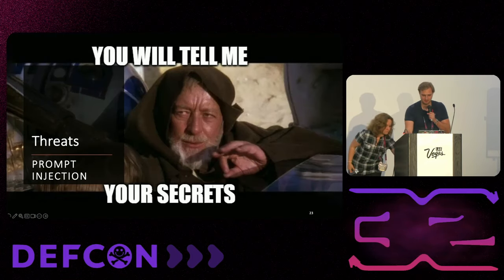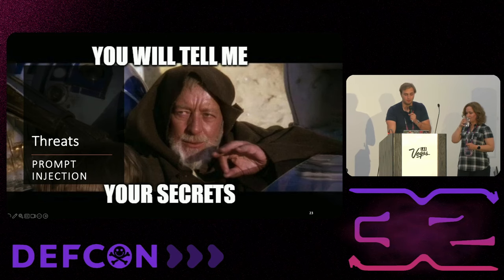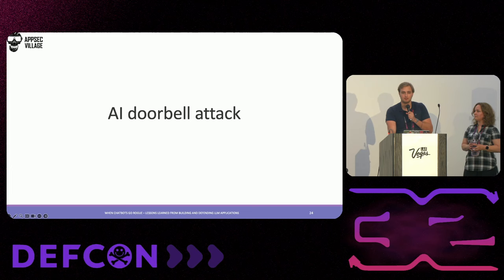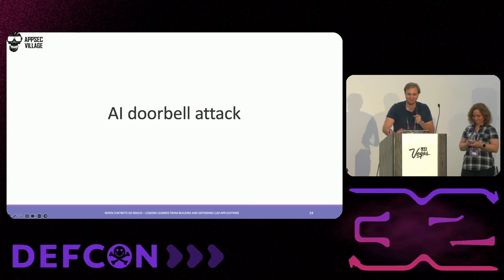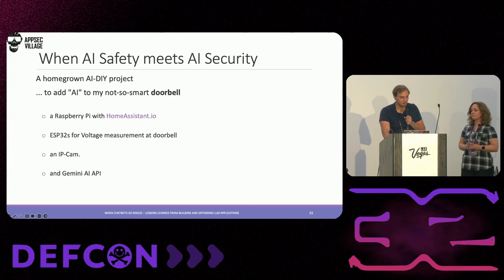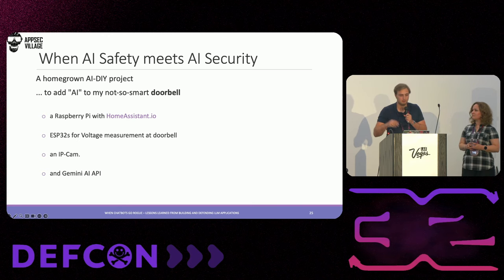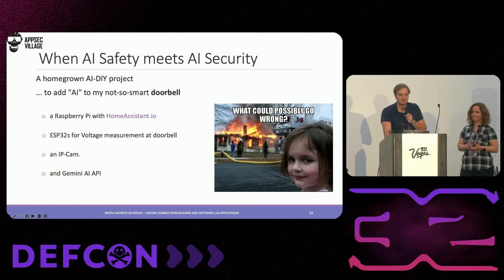Now let's discuss prompt injection. In the initial slides, you've seen many wrong misbehaviors from different chatbots, and in most cases prompt injection is one of the reasons behind this. As a proof of concept for this presentation, I wanted to make my not-so-smart doorbell at home a little bit smarter by adding Gen AI. This will be a great example to show how AI safety is meeting AI security. I had a Raspberry Pi with Home Assistant, some ESP32 to measure the voltage of my doorbell and door opener, and an IP cam. What could possibly go wrong when I add a Gemini AI API?